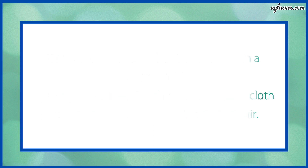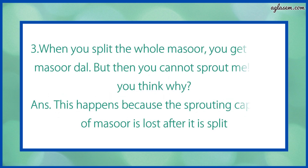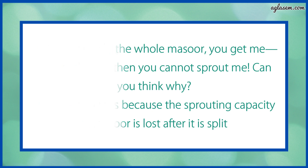Question number 3 says: when you split the whole masoor, you get masoor dal. But then you cannot sprout it. Can you think why? The answer is: it happens because the sprouting capacity of masoor is lost after it is split.